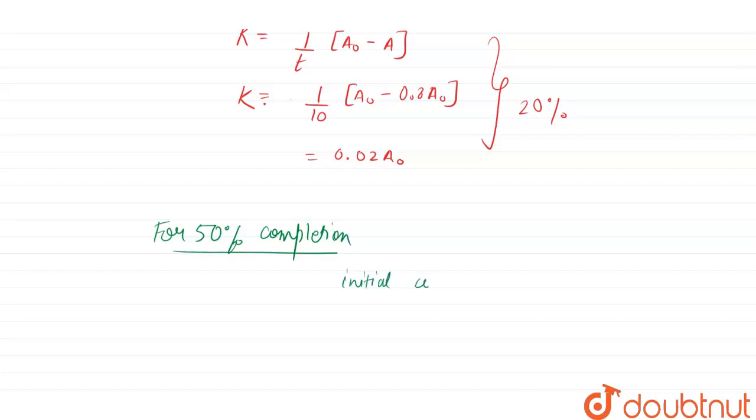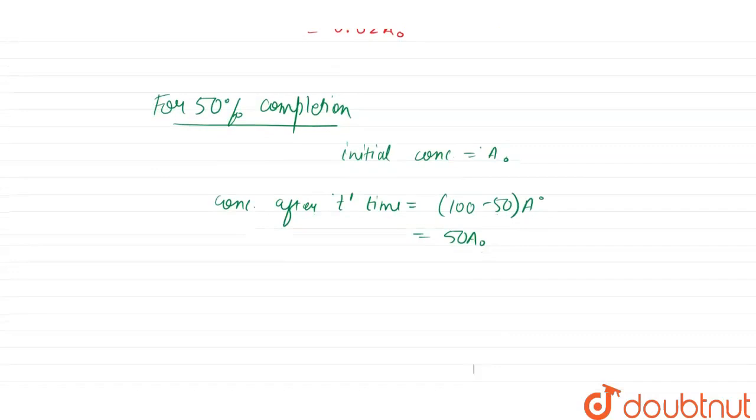Concentration left after T dash time will be equals to 100 minus 50 A₀, which equals 50 A₀. So it will be 0.5 A₀, which is initial concentration.